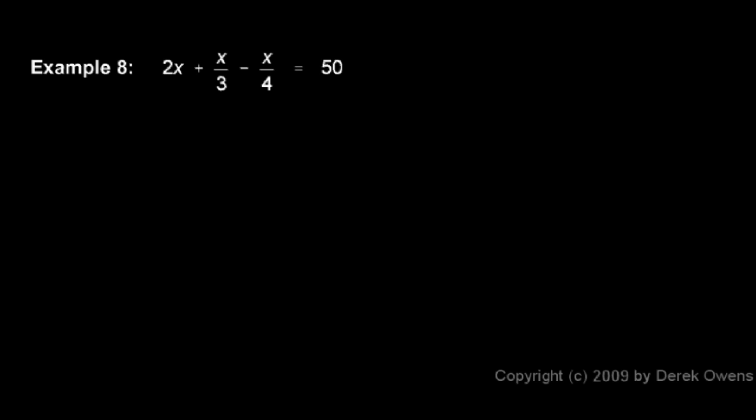2x plus x over 3 minus x over 4 equals 50. I'll rewrite the problem here just so I have a little bit of room to work, and I look at the denominators, 3 and 4. It's pretty easy to see that the least common denominator is 12.